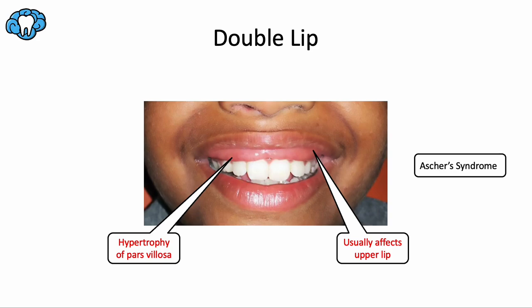Double lip is an unusual clinical finding considered a developmental anomaly where the pars villosa — the inner zone or wet part of the lip — experiences hypertrophy during fetal development, resulting in an extra fold of tissue. It usually involves the upper lip more frequently than the lower lip. During smiling, because the lip naturally retracts, this extra tissue presents as a sort of second lip. This is non-inflammatory hypertrophy — completely unrelated to inflammation — resulting in redundant tissue. Surgery can be done to excise this tissue to resolve aesthetic or functional problems.